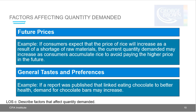Two other factors that affect quantity demanded are future prices and general tastes and preferences. If consumers expect that the price of rice will increase due to a shortage of raw materials, current quantity demanded may increase as consumers stockpile rice to avoid the higher future price. Another factor is general tastes and preferences — for example, if a report linked eating chocolate to better health, demand for chocolate may increase.